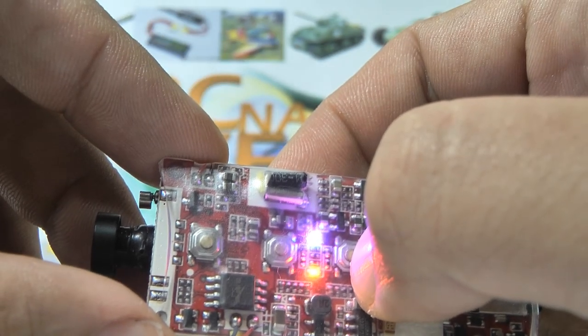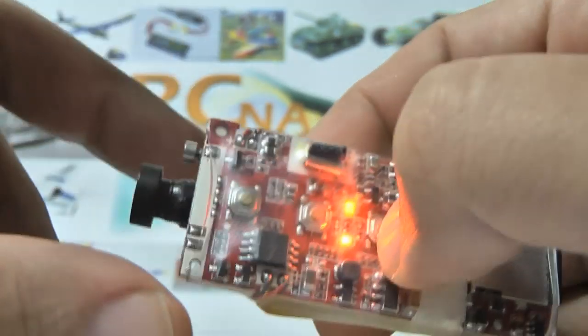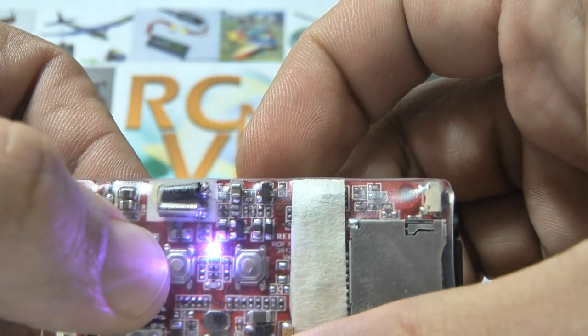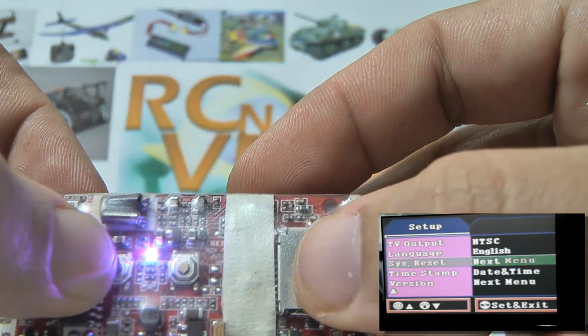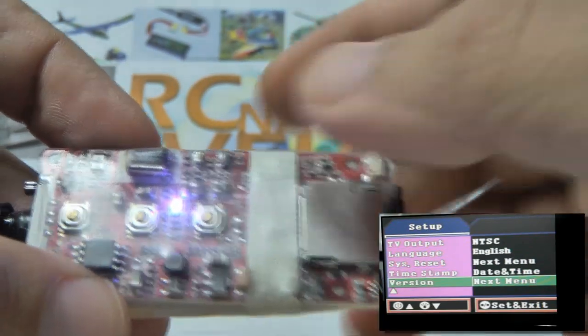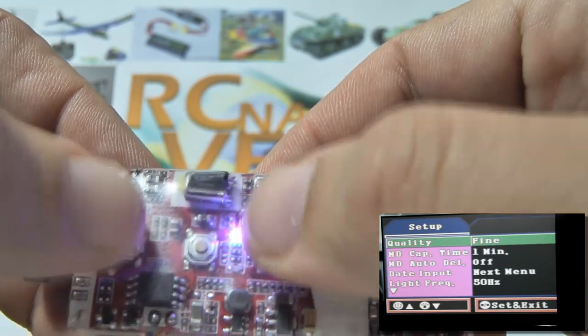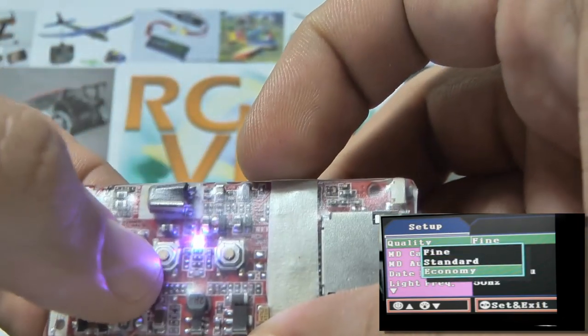If you hold this button for three seconds with the video cable connected, you enter configuration mode. You can navigate the menu options using the external buttons and select with the middle button.